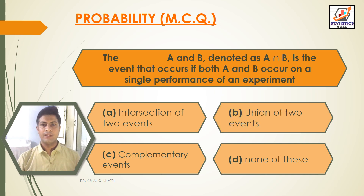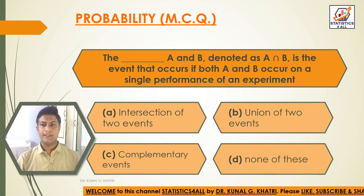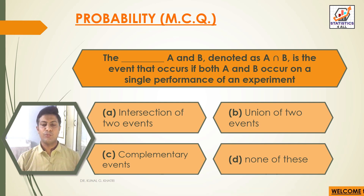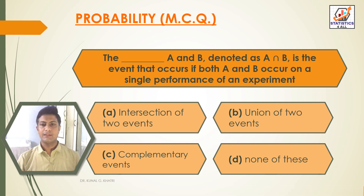Next question: A intersection B is the event that occurs if both A and B occur on a single performance of an experiment. Option A: intersection of two events. Option B: union of two events. Option C: complementary events. Option D: none of these. The answer is Option A — intersection of two events.